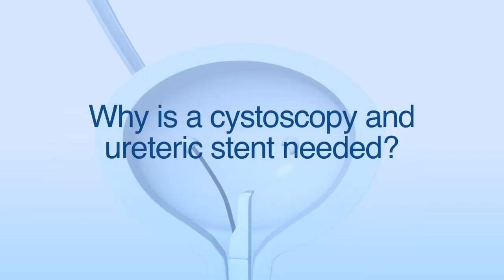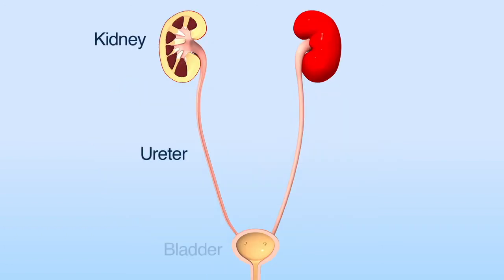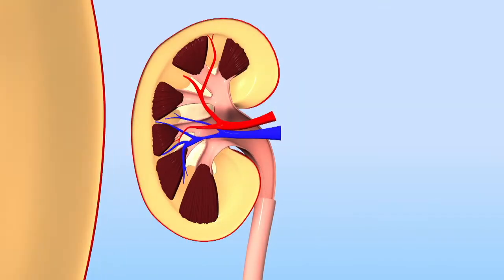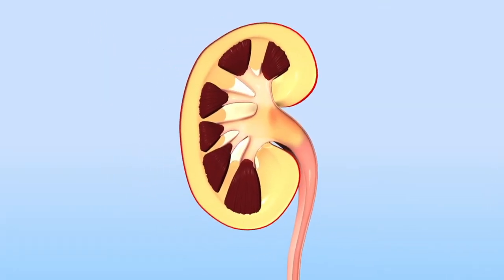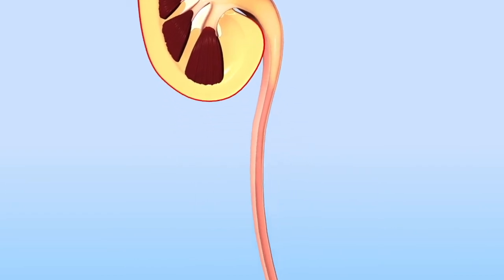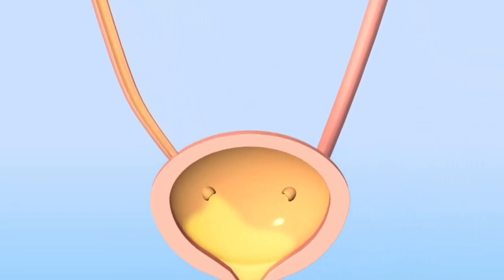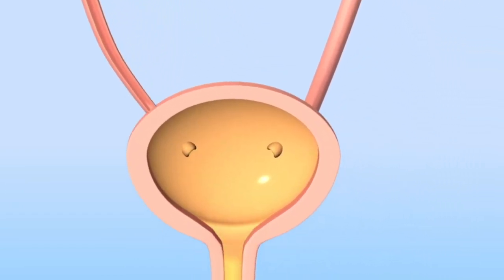The kidney is an organ whose primary responsibility is to filter the blood and to remove waste products as urine. When the kidney makes urine, it flows down a pipe which is called the ureter into the bladder. The urine is then emptied from the bladder through the urethra, which is commonly called the water pipe.